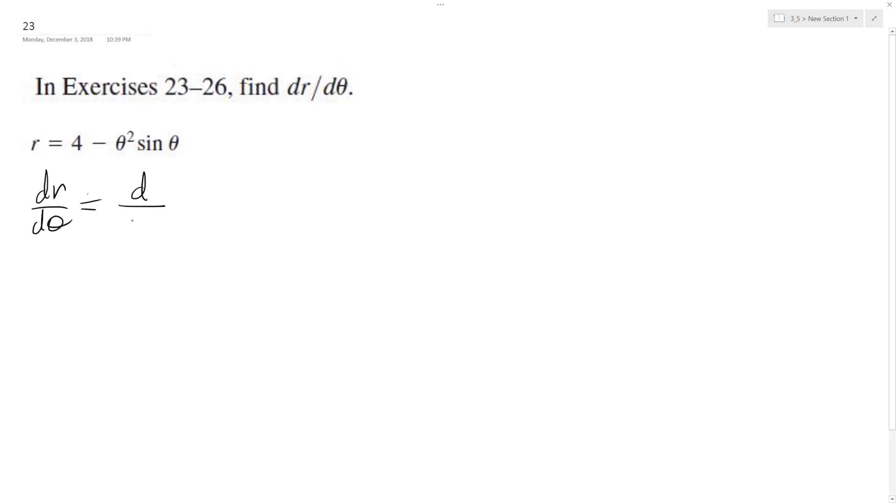So d/dθ of 4 minus d/dθ of theta squared times sine theta plus - I've got to put this around here - theta squared d/dθ of sine theta.